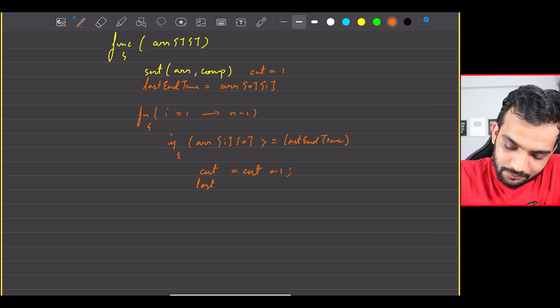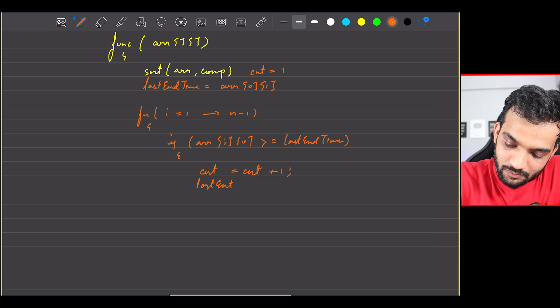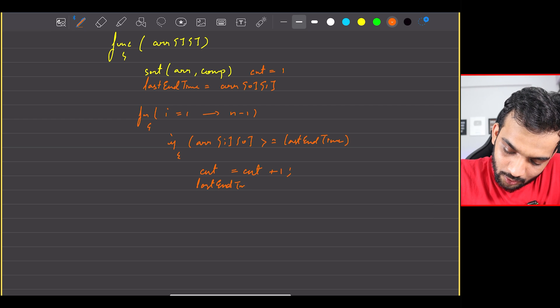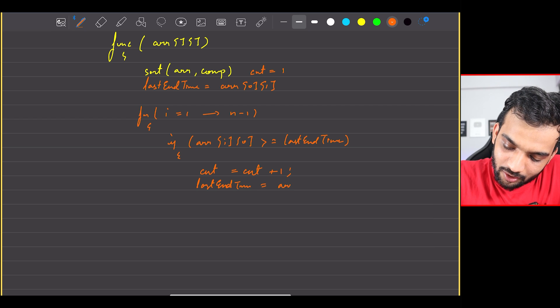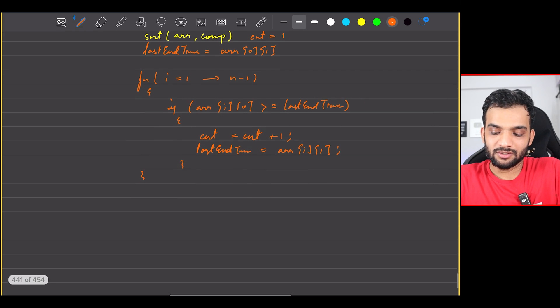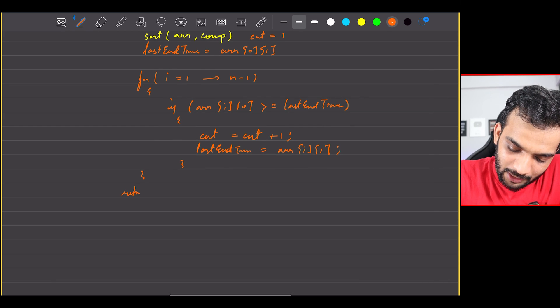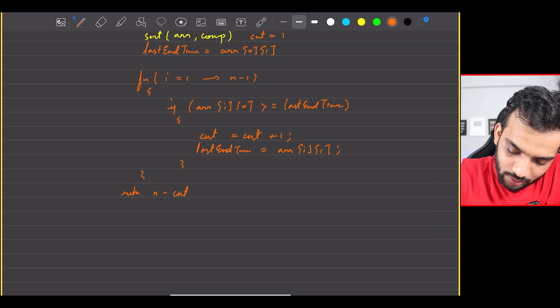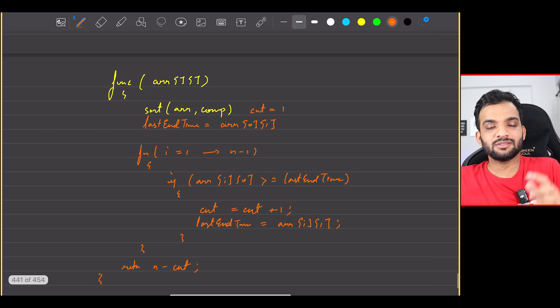And at the same time I can say the last end time will be updated to array of i because it is ending at one. So I know what is the maximum number of meetings, so I can straight away return the minimal removal to be n minus count. Done and dusted, the same code as N meetings in one room.